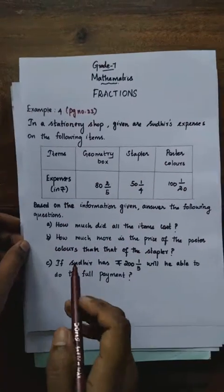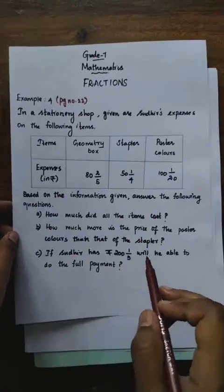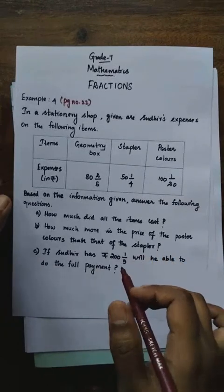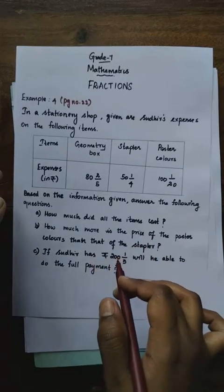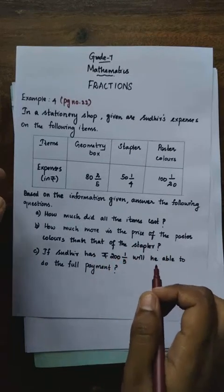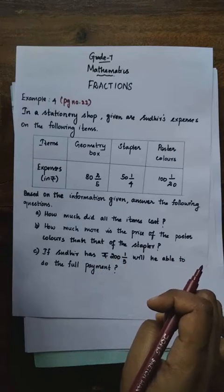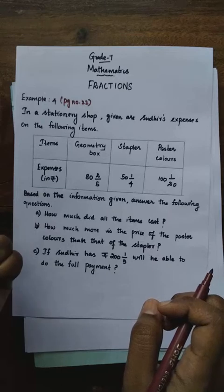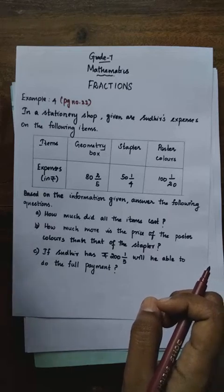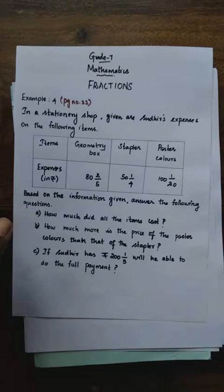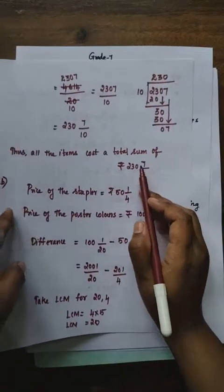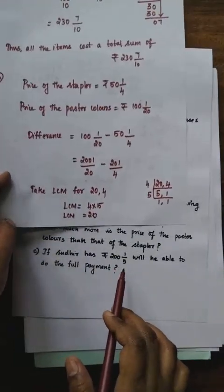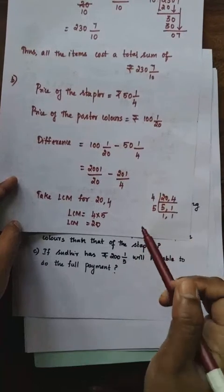Now the third question: if Sudhir has rupees 201 and 1/5, will he be able to do the full payment? No — because the total cost of all the items is 237 and 7/10, but Sudhir has only 201 and 1/5, which is less than 237 and 7/10. So he will not be able to purchase all the items.